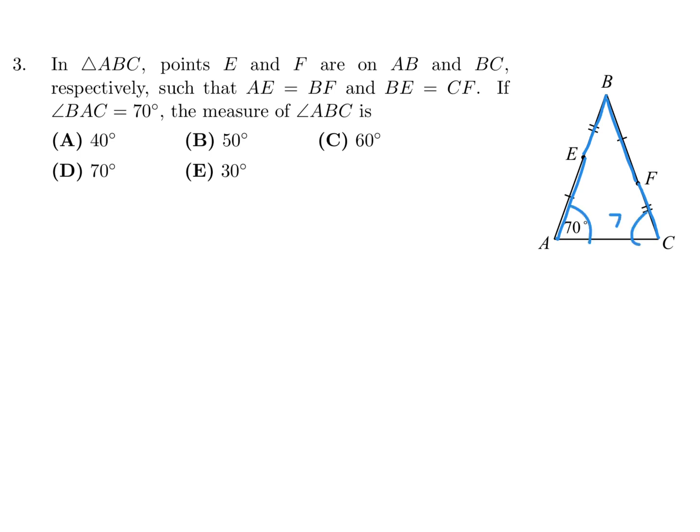So if that's 70, then that's 70. And if that's theta, then theta plus 70 plus 70 would be 180, and therefore theta would be 40. And that theta is referring to angle ABC. So 40 is the answer.